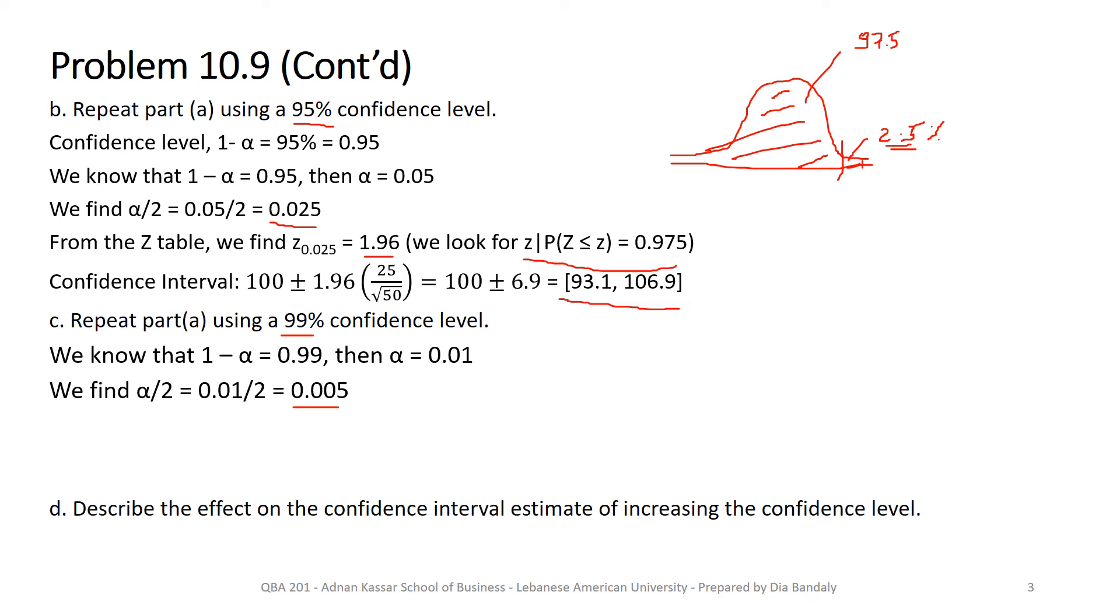Which means this area now is 0.5%, much, much smaller, which means what? Z will be much bigger, right? Because if we are looking for z with 0.5% on the right, it will be on the right hand side of the previous one. So it certainly is going to be bigger than 1.96 that we found before.